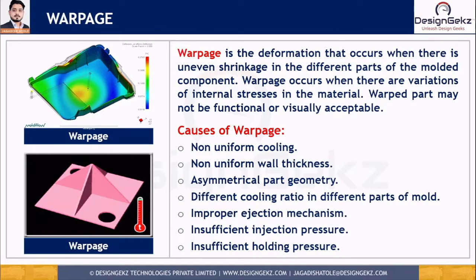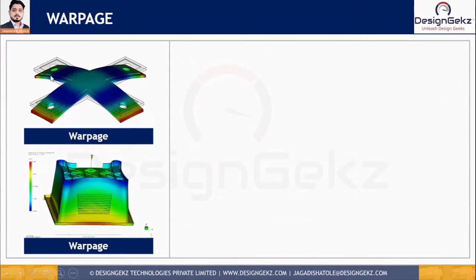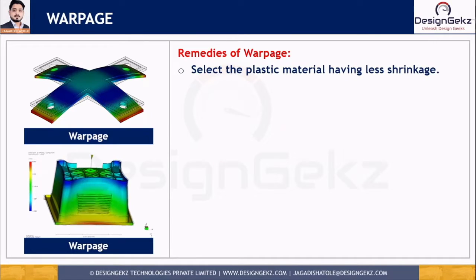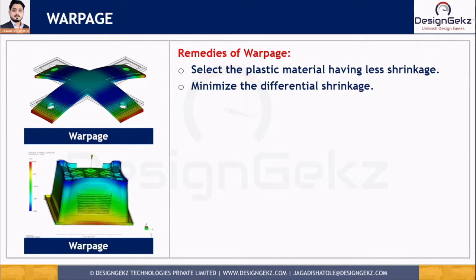Now let's discuss the remedies for warpage. The first remedy is to select a plastic material having less shrinkage. If we have the option to select the material, we should select one with less shrinkage. The second remedy is to minimize differential shrinkage by reinforcing the materials — we can add filler reinforcement, fiber reinforcement, glass reinforcement, or mineral reinforcement to minimize the shrinkage percentage of the material.